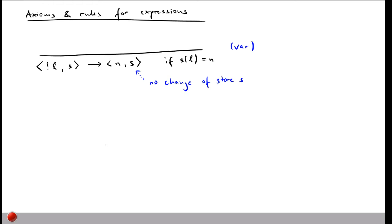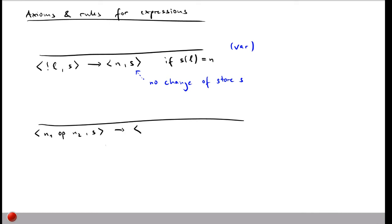The next axiom is for evaluating operations. Once we've read some values from memory, we may want to compute something using them. This axiom says: if our program is some value N1 followed by operator op and then some value N2, given store S, we can reduce this to value N with the same store S, if N is the result of applying op to N1 and N2. This rule is called 'op', for operator.